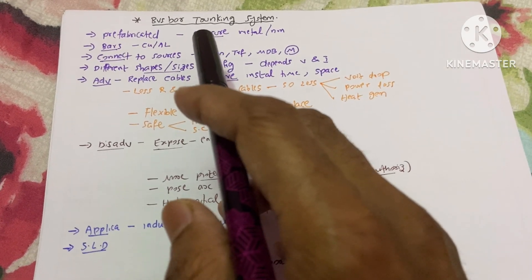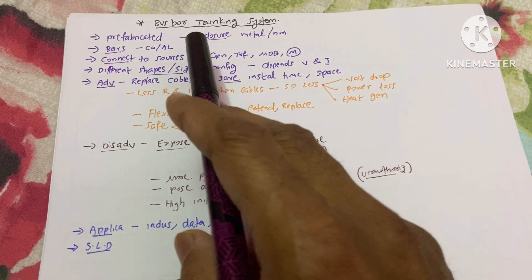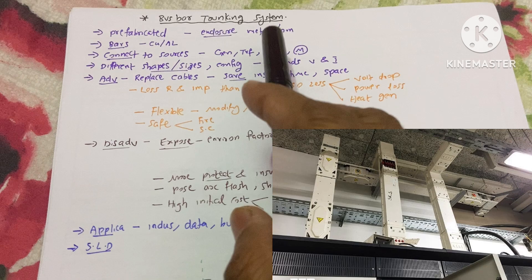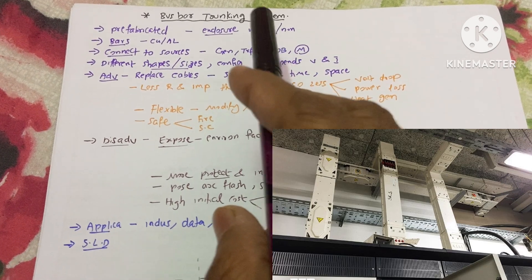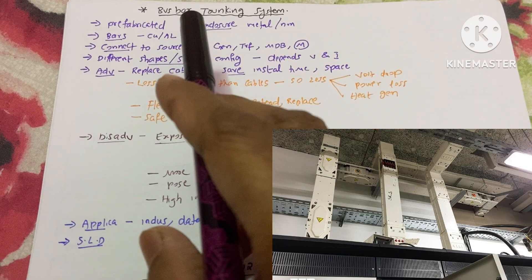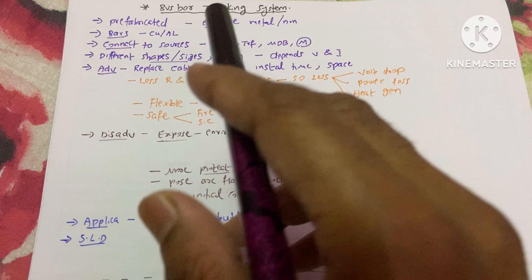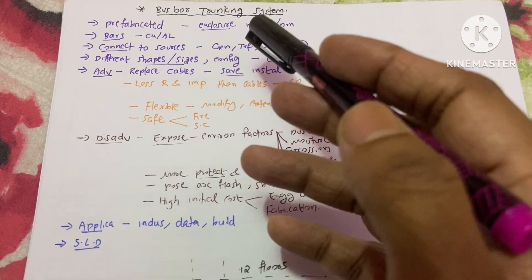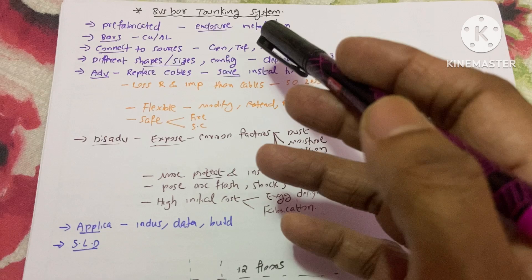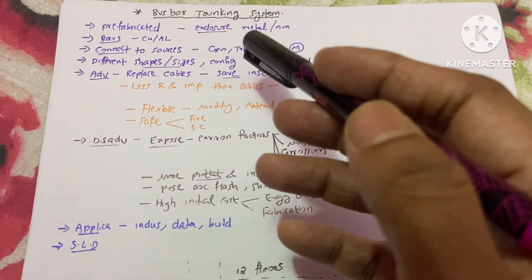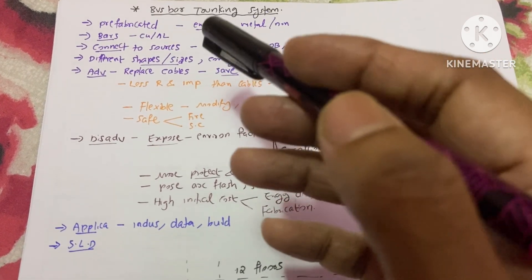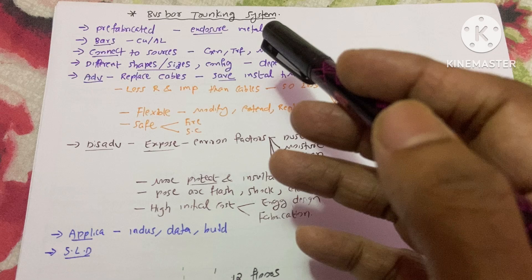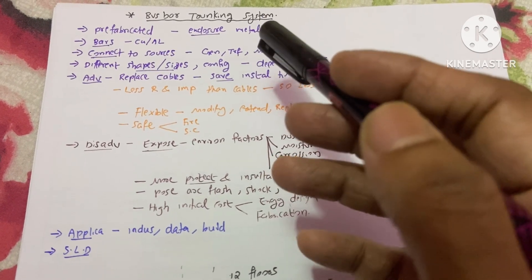Hi guys, how are you? Today's topic is bus bar trunking system. Don't confuse it with the normal bus bar. The normal bus bar would be inside only in panels, but this bus bar trunking system is a system which distributes electrical energy to the entire building. I will explain this with the help of a single line diagram.